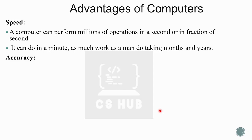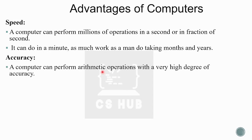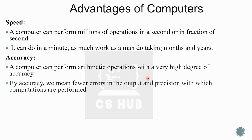The next point is accuracy. Computer never makes mistakes provided we give it correct input. Computer can perform arithmetic operations with a very high degree of accuracy. By accuracy, we mean fewer errors in the output and the precision with which computations are performed.